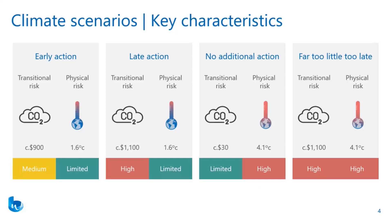Another criticism of the Bank of England data is that there's no base scenario — that is, no scenario that takes into account what is currently priced into markets. What we use as our base scenario is the early action scenario, as we believe this is a reasonable proxy for comparing the relative impact of climate risk. While this might not be a market-priced model, we don't feel that any of the models we've looked at consider what's priced into markets accurately enough to justify completely changing the modelling process.